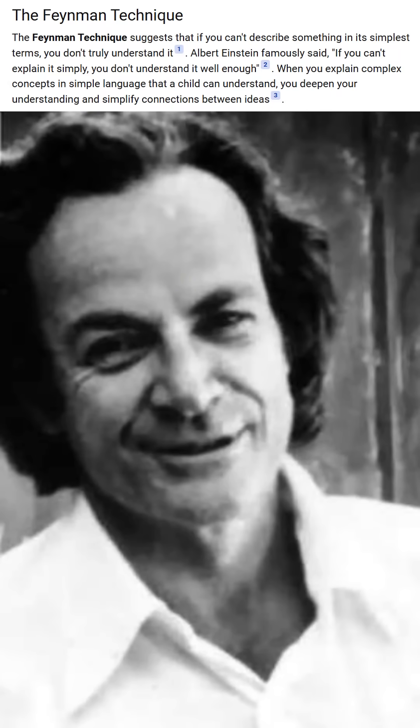Einstein once said that if you can't explain something in a way that a child can understand, then you just don't understand that thing well enough. Now I disagree with Einstein on a great many things, but I strongly agree with him on that matter. We shouldn't give Einstein all the credit on that one though, because this is a key principle in what is referred to as the Feynman technique.